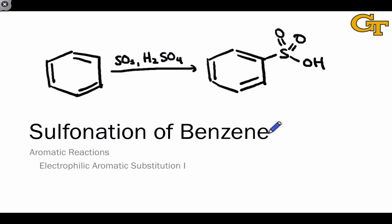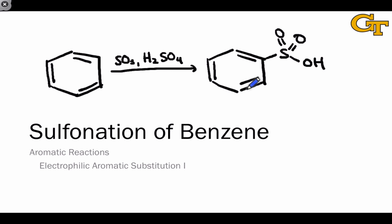In this video we're going to take a look at the sulfonation of benzene, which installs a sulfonic acid group — sulfur doubly bound to two oxygens and singly bound to a hydroxyl group — onto a benzene ring.